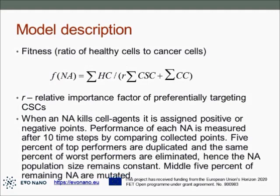During the simulation, to see what is happening we calculated fitness at each time step, which is simply the ratio of healthy cells to cancer cells. In order to implement a simple competition between nano agents, we designed a basic procedure: when a nano agent kills a cell agent it receives positive or negative points — positive for killing a tumor cell, negative for killing a healthy cell. Performance of each nano agent is measured after 10 time steps. The top five percent of performers are duplicated and the same percent of worst performers are eliminated, so the total population of nano agents remains constant — we injected 100 nano agents.